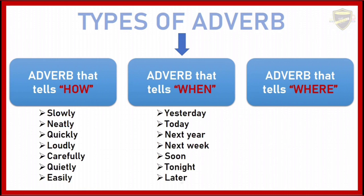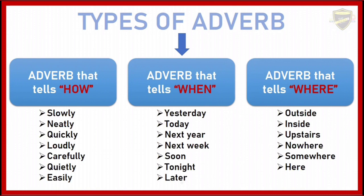Now let's see the third one — adverb that tells where. Words like outside, inside, upstairs, nowhere, somewhere, here. These words tell us where an action happened.